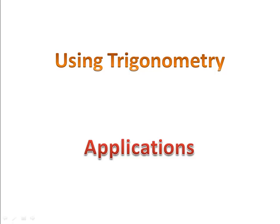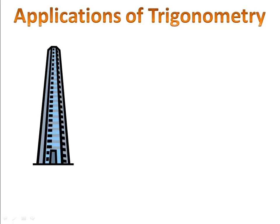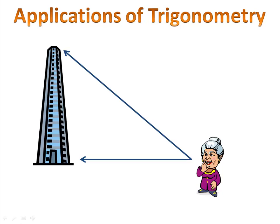In today's lesson, we're going to take a look at some applications of trigonometry. Suppose we have a building. We have a little old lady down on the ground and she's looking at the bottom of the building. She decides to look upward toward the top. The angle that's been formed by her looking up is called the angle of elevation.